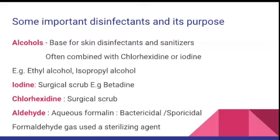Ethyl alcohol or isopropyl alcohol is the important base for sanitizers. Iodine is used as a surgical scrub — the example is Betadine. Chlorhexidine is also used as a surgical scrub. Aldehydes like aqueous formalin are bactericidal and sporicidal, which is why they are mostly used in operation theaters. Formaldehyde gas is used as a sterilizing agent in fumigation.